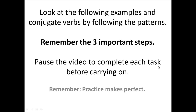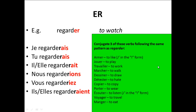Look at the following examples and conjugate verbs by following the patterns. Remember those three important steps: you need the subject pronoun, you need the stem, and you need the ending. Pause the video to complete each task before carrying on. Regarder: je regarderai, tu regarderais, il/elle regarderait, nous regarderions, vous regarderiez, ils/elles regarderaient. Copy this verb down and then do three of the other verbs following exactly the same pattern as regarder.